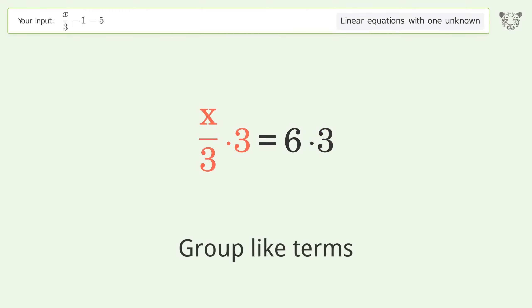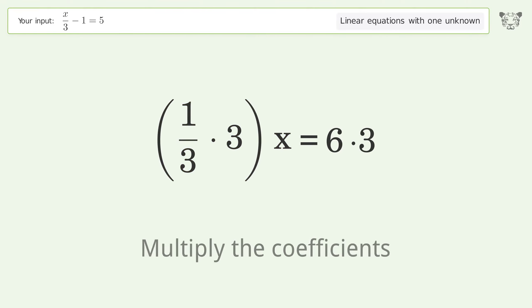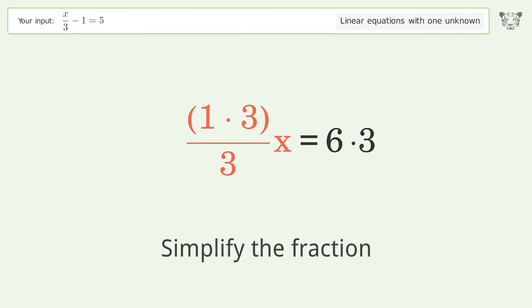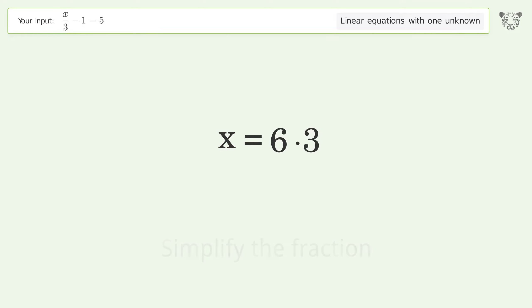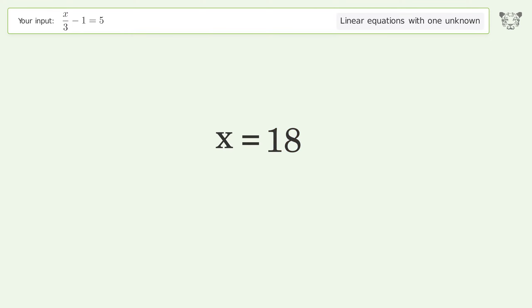Group like terms. Multiply the coefficients. Simplify the fraction. Simplify the arithmetic. And so the final result is x equals 18.